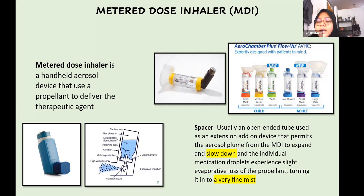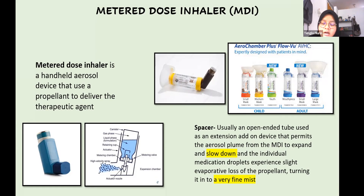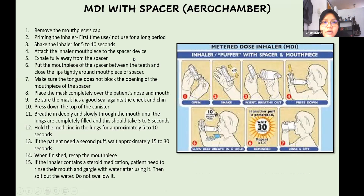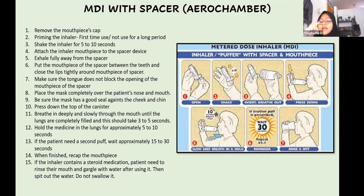We usually use an aerochamber, which is a spacer that has a one-way valve preventing exhaled breath from entering the chamber. The spacer comes in various sizes — with mask or mouthpiece — and different sizes for children and adults. To use the MDI with spacer, hold the MDI upright with the index finger at the top of the canister and the thumb at the bottom. Remove the mouthpiece cap.